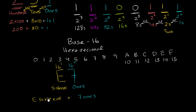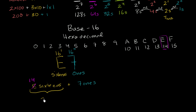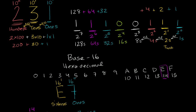If we want to reconceptualize this in our decimal number system, what is E 16s? Well, E in decimal is 14. So this is 14 times 16, which equals 224, plus seven ones. And 224 plus 7 gives you 231. So you can represent the same quantity in any of these different number systems.